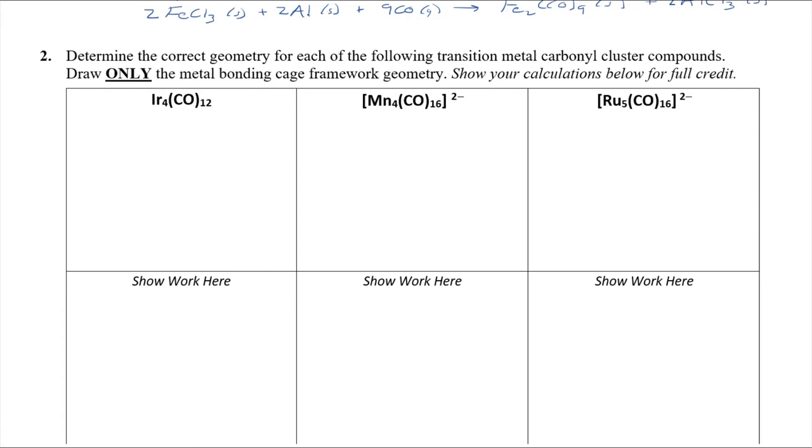This one deals with the carbonyl cluster complexes that we talked about at the end of class when we discussed carbonyls. Here we're going to try to think about what geometry the four metals here, the four metals here, and the five metals here develop, and then what does that look like before it gets decorated by the carbonyls. So we're really focusing on the metal cagework framework geometry.